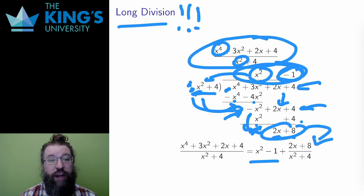This means that x to the 4 plus 3x squared plus 2x plus 4, divided by x squared plus 4, is equal to x squared minus 2, the quotient, plus 2x plus 8, the remainder, over x squared plus 4. And I have now made a proper rational function.